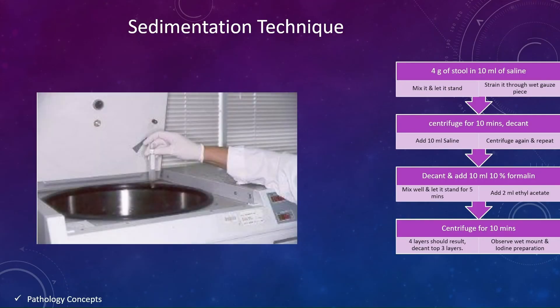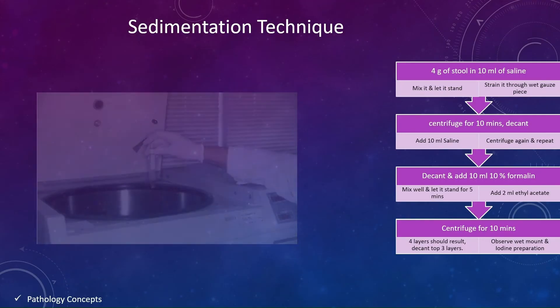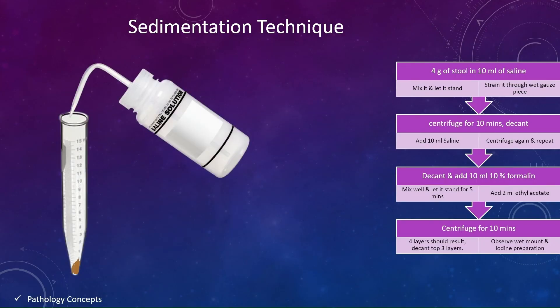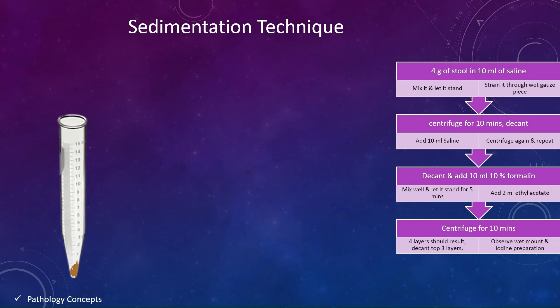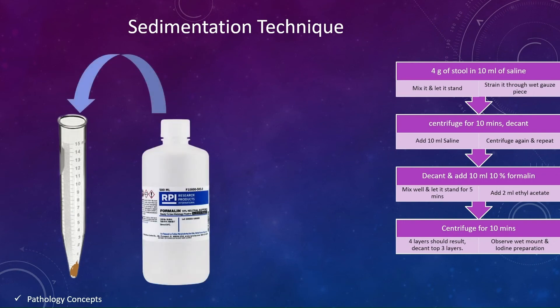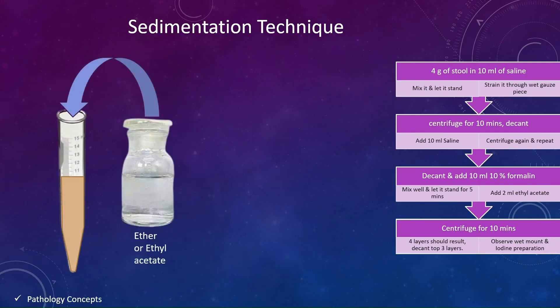Then centrifuge it for 10 minutes and decant. After decanting, add 10 ml saline and centrifuge again, then repeat and decant. After that, add 10 ml of 10% formalin, mix well, and let it stand for 5 minutes. After 5 minutes, add 2 ml of ethyl acetate.